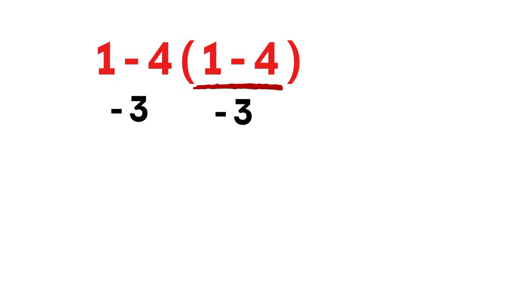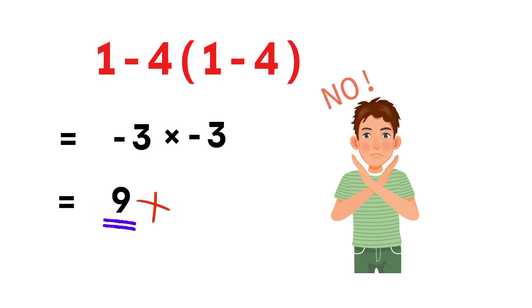1 minus 4, which gives negative 3. And then multiply negative 3 times negative 3, getting positive 9. But that is not correct.